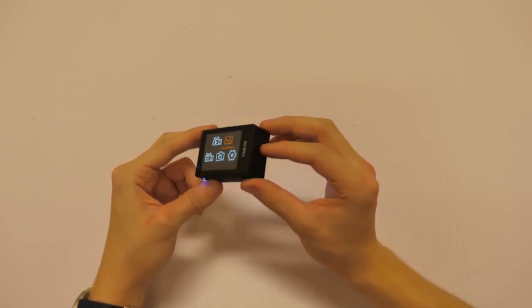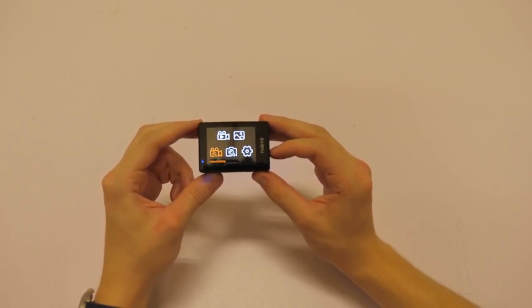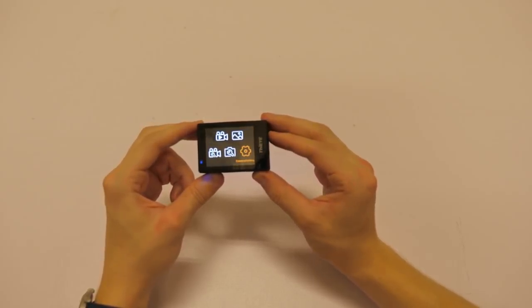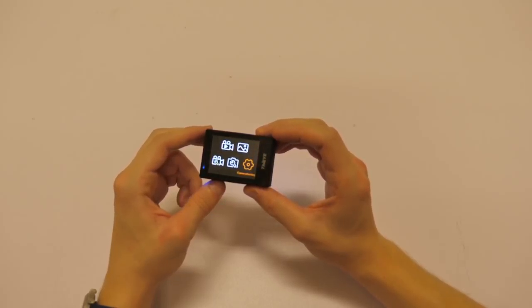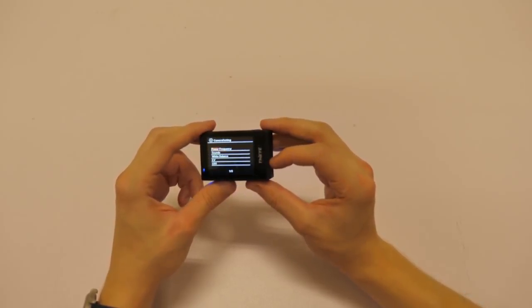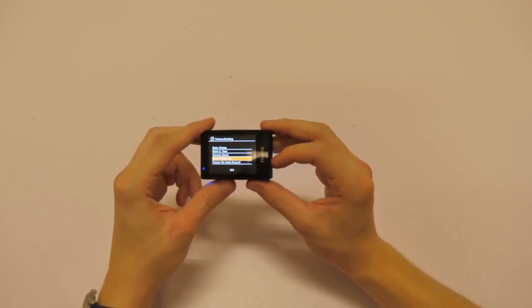And then how to scroll around the different options, you use these arrows here, the up and down arrows. Photo, playback, video setting, photo setting, camera setting. So let's go ahead and just give that a little clip at the moment. Oh, and it's got different options, power frequency, sounds, etc. There you can see.